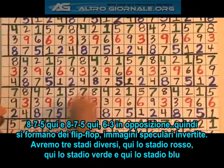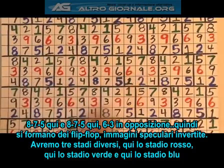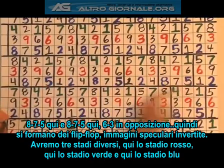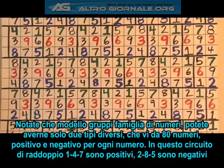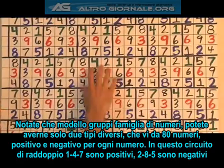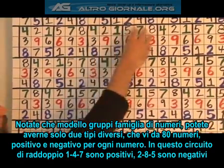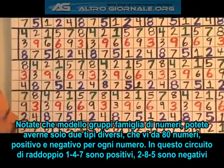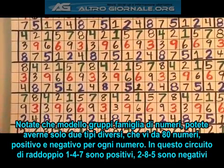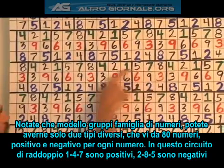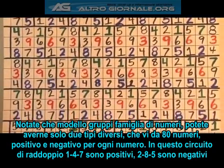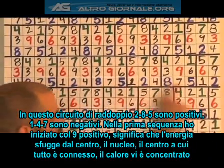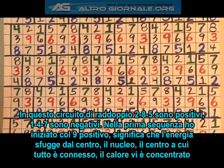So we're going to have three different stages — one's going to be my red stage, one's going to be my green stage, one's going to be my blue stage. Notice that I'm modeling family number groups. There are only two different kinds of these groups you can have, which gives you again the 18 numbers — positive and negative for each number. On this doubling circuit, my 1, 4s and 7s are positive and my 2, 8s and 5s are negative. On this doubling circuit, my 2, 8s and 5s are positive and my 1, 4s and 7s are negative.